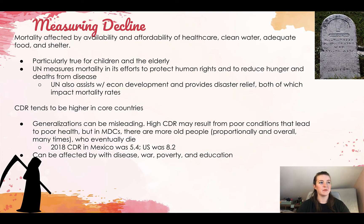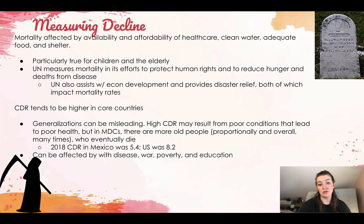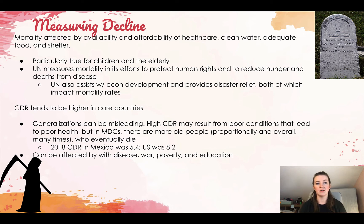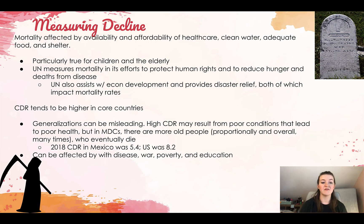Mortality is affected by the availability and affordability of healthcare, clean water, adequate food, and adequate shelter. This is particularly true for children and the elderly, who are more vulnerable populations. The UN measures mortality in its efforts to protect human rights and reduce hunger and deaths from disease, and also assists with economic development and disaster relief. Both of those impact mortality rates — if a person is cared for after a disaster, they're more likely to live.